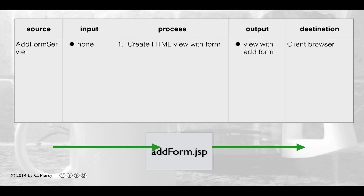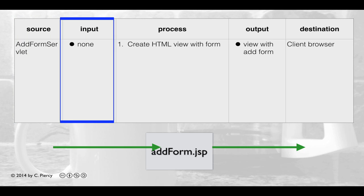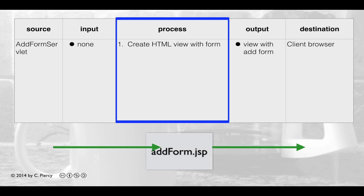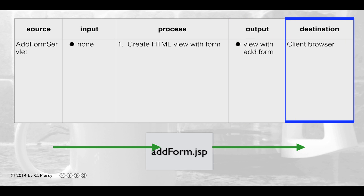Here's my IPO table for the addform.jsp. Recall from the wireframes that this will provide the form for the user to enter new book information. The source will be the dispatcher pointing to addform.jsp from the AddForm servlet. No inputs will be provided; we'll simply create an HTML view with a form for all of the book information. Output will be the view with the add form sent back to the client browser.